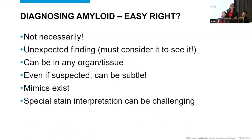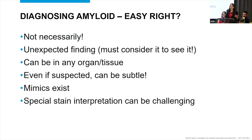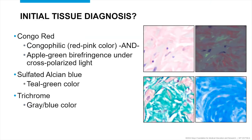Sometimes on the actual tissue, the finding of amyloid can be extremely focal and can just blend into the background. Using GI biopsy as an example: if you're thinking a patient has diarrhea and you're worried about inflammatory bowel disease, looking for architectural distortion, you might miss the little slips of amyloid in the submucosa. Amyloid can be seen in any organ or tissue, it can be unexpected, and there are mimics — things that look like amyloid. Interpretation of special stains like Congo red can also be technically challenging.